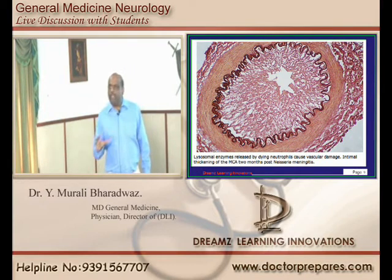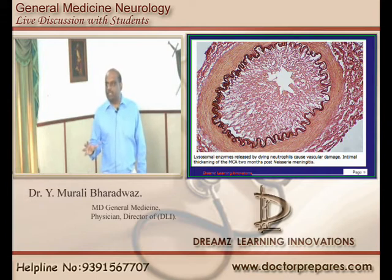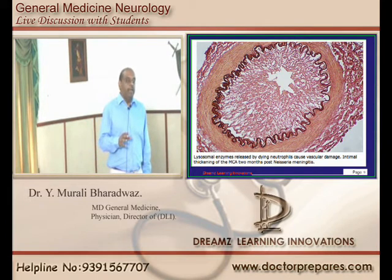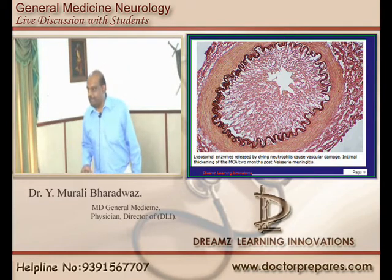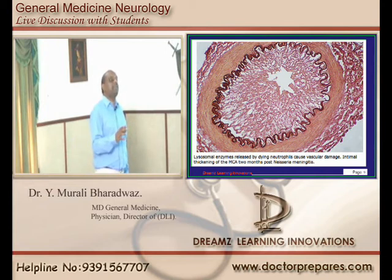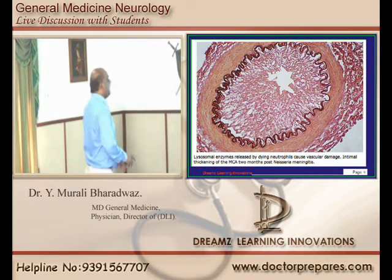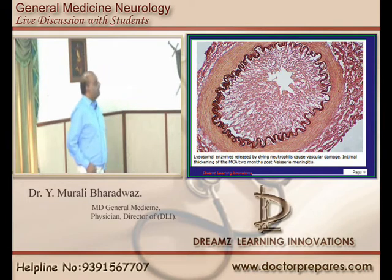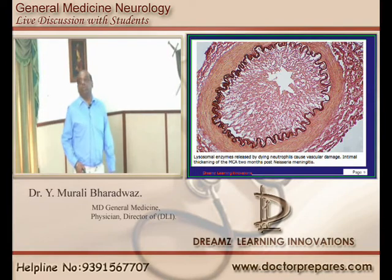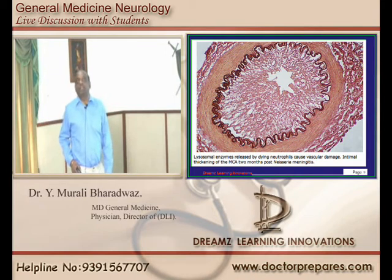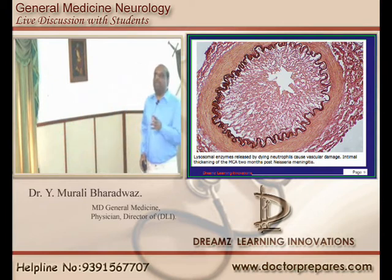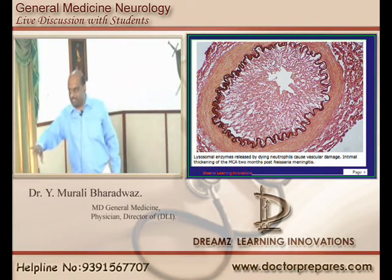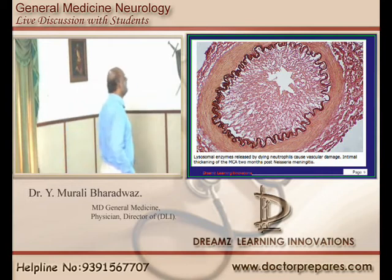Tuberculous meningitis is known to lead to the development of vasculitis as a complication, causing hypoxic ischemic injury to the brain. This is a typical vessel infiltrated with polymorphonuclear leukocytes, showing vasculitis. Because of this ischemic injury, patients will develop focal neurological deficits — that is what we need to fundamentally appreciate.